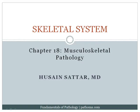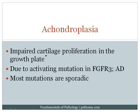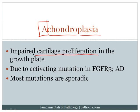The first section in the musculoskeletal pathology chapter deals with the skeletal system. The first disorder is achondroplasia. 'A' means without, 'chondro' refers to the chondrocytes that make cartilage, and 'plasia' refers to growth. So this is a disorder of cartilage proliferation in the growth plate.